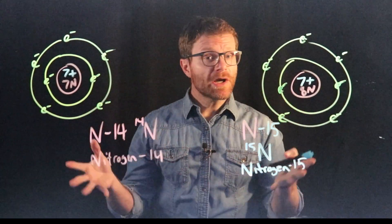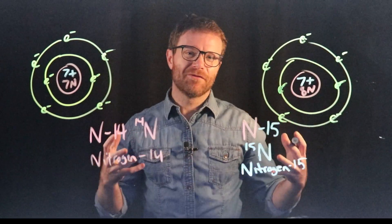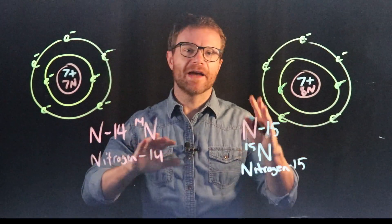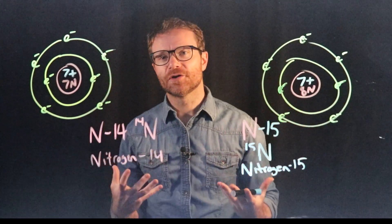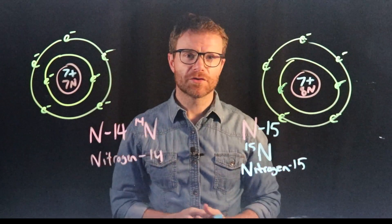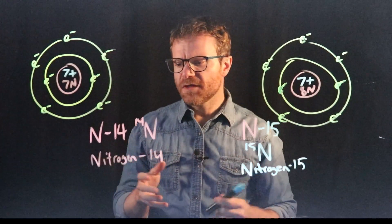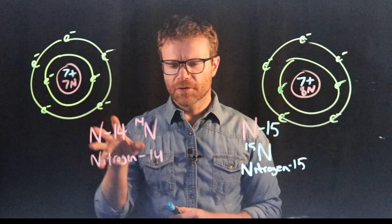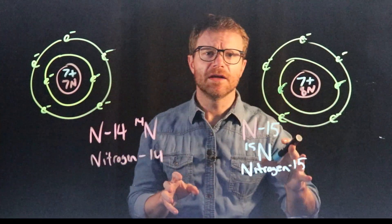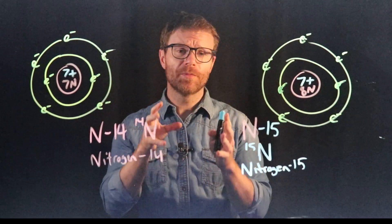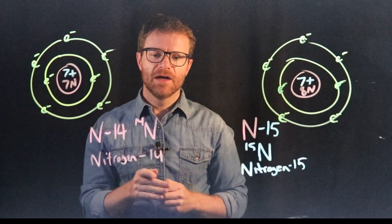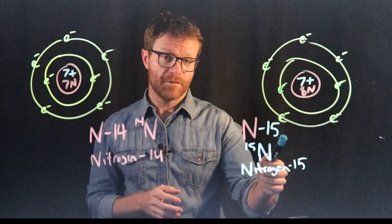Now there's nothing special about nitrogen. Pretty much every element out there in the world has different isotopes, has different versions with different amounts of neutrons. Now you might be a little bit confused at seeing the atomic mass of N14 and the atomic mass of N15. But when you look in the actual periodic table of the elements, you don't see 14 or 15.